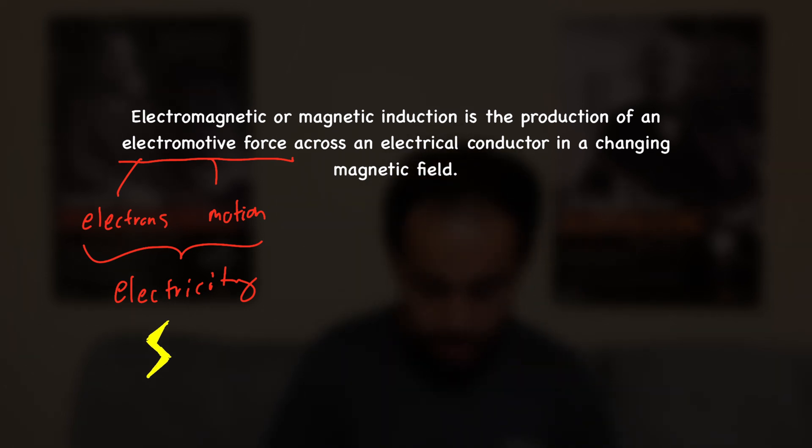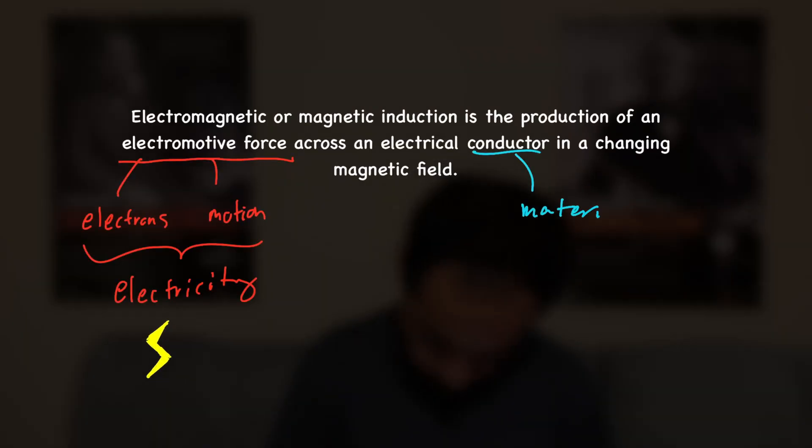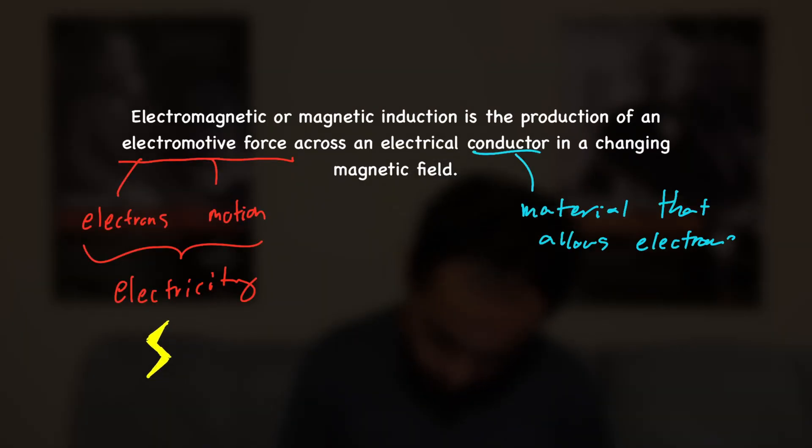So electromotive force across an electrical conductor — now a conductor is just some material that allows electricity to flow through easily. An example of a really good conductor is copper wire, and that's why we use it in so many different applications.